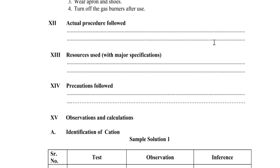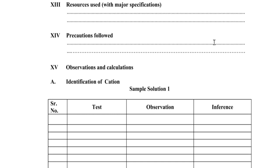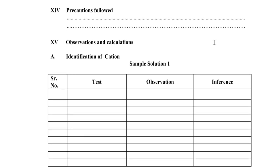You have to write the actual procedure followed — the procedure is given in the manual. Resources used are also given in the manual. Precautions followed are also given. For identification of cation, first write down the test. If it is positive, write down the observation and inference. If it is negative, write down no precipitate (PPT).